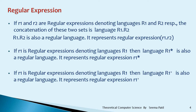If R1 and R2 are regular expressions denoting the languages R1 and R2 respectively, then the concatenation of the two sets is also another language, that is R1 · R2. R1 · R2 is also a regular language, and it represents the regular expression R1 · R2. The dot denotes concatenation.